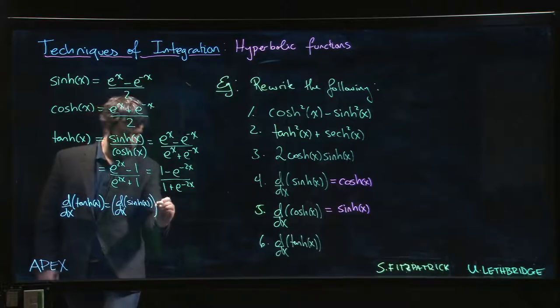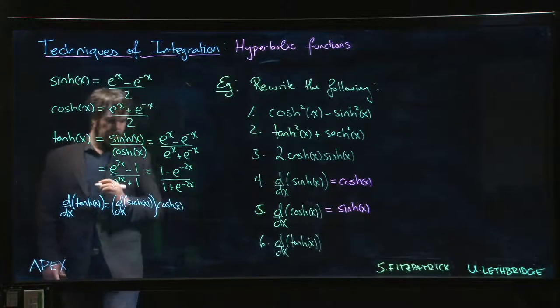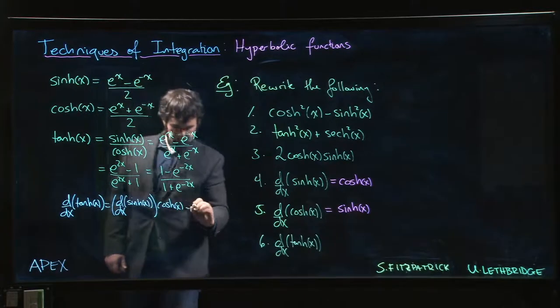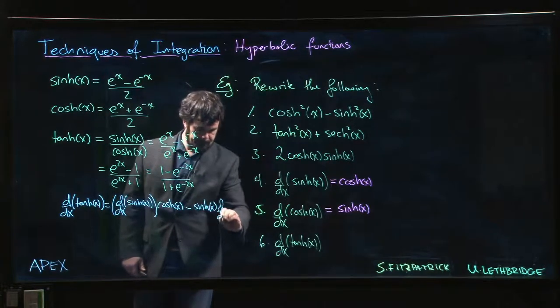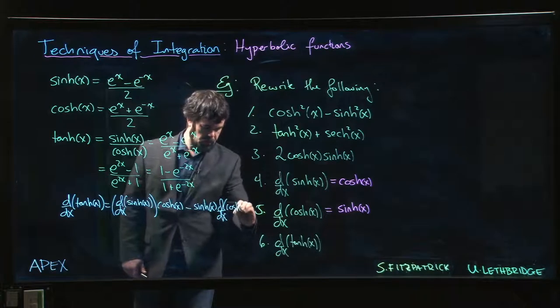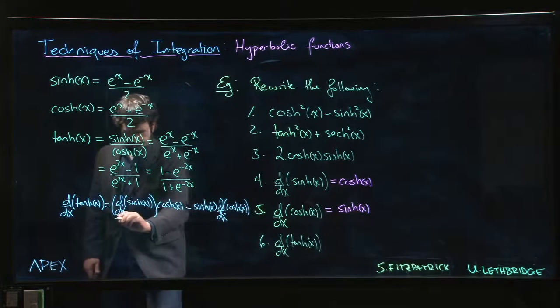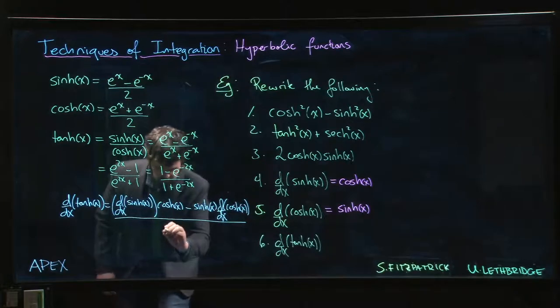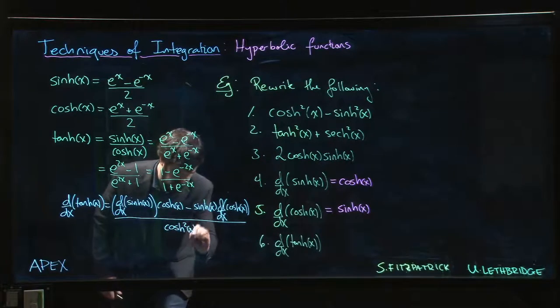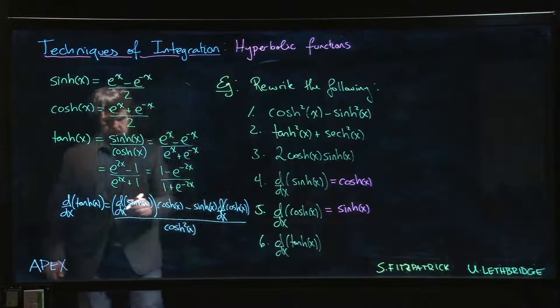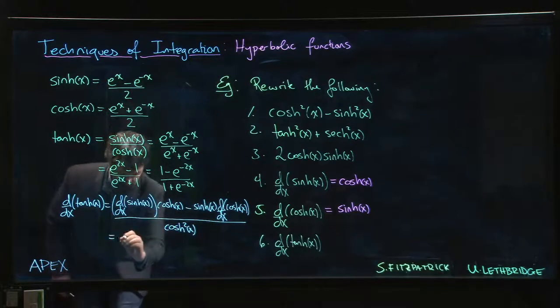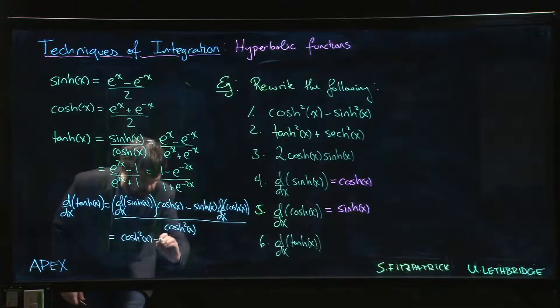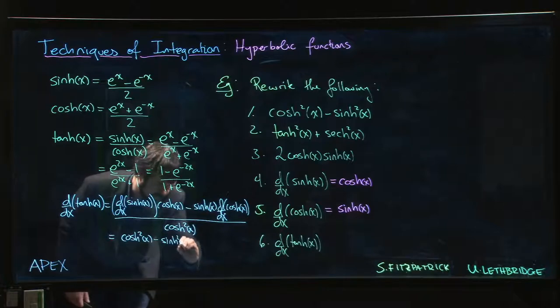the derivative of hyperbolic sine times the bottom, minus the top times the derivative of the bottom which is hyperbolic cosine, divided by the bottom squared. The derivative of sinh is cosh, so this is cosh squared minus sinh times cosh squared, making myself say that just so we